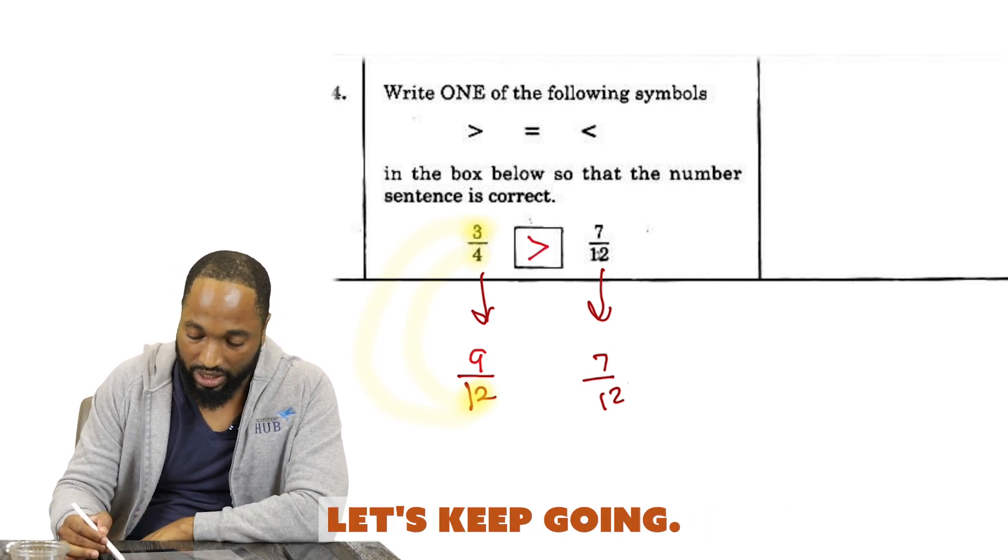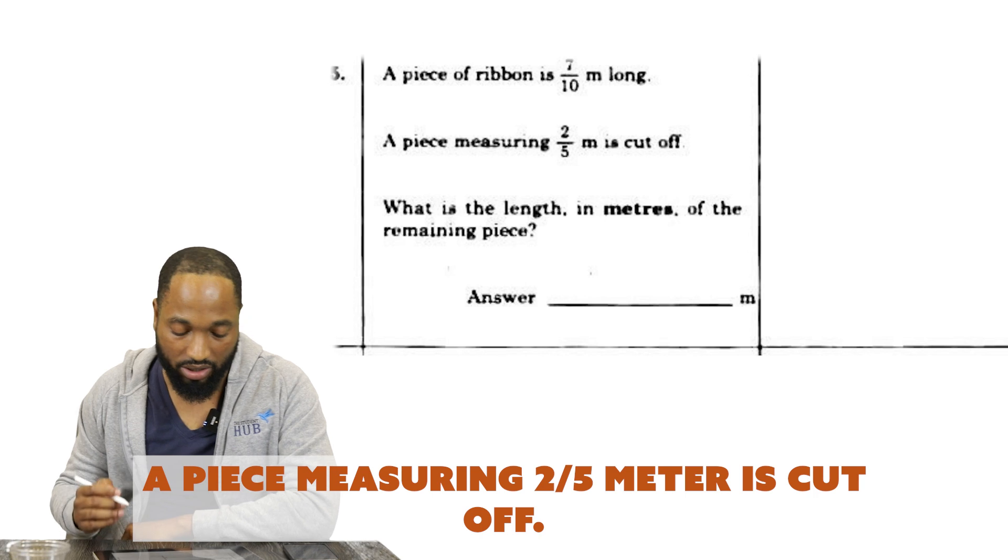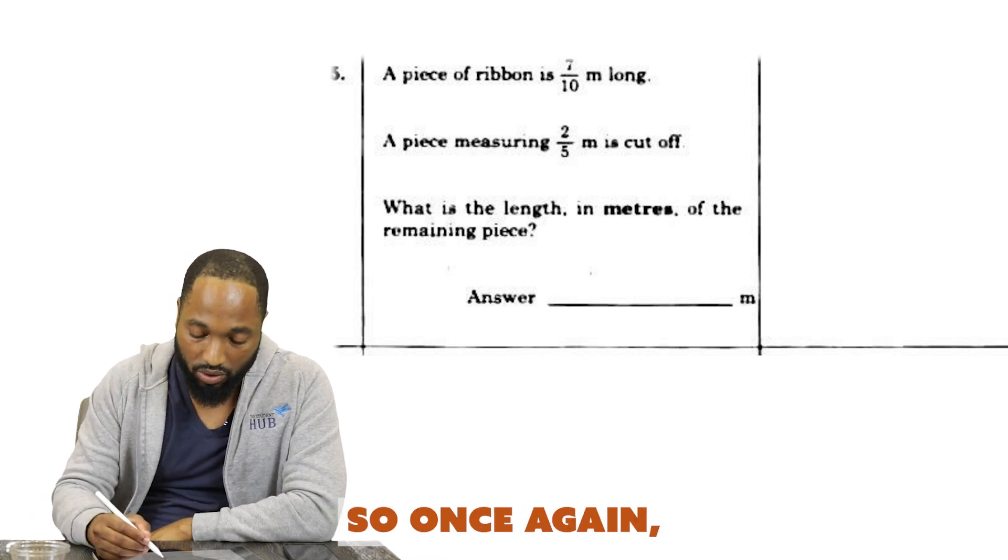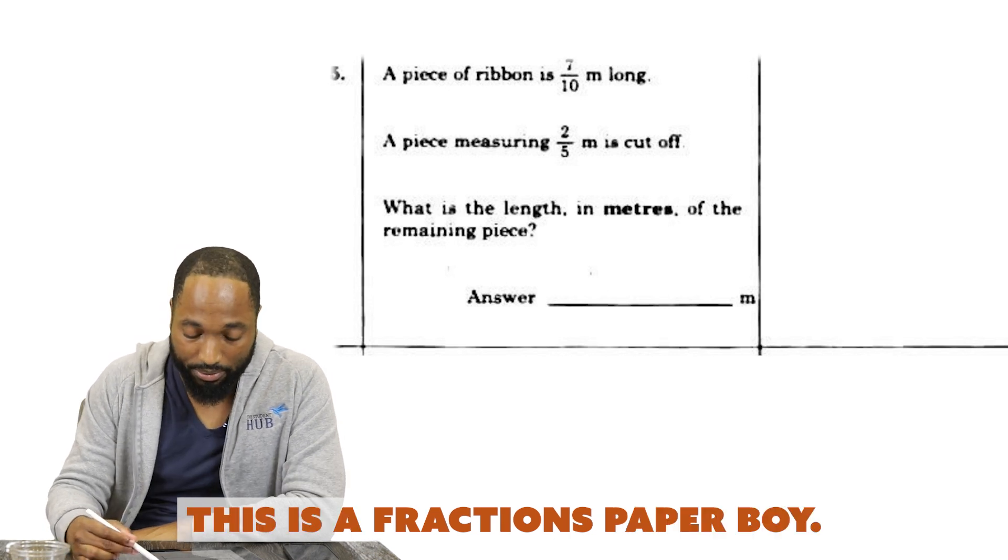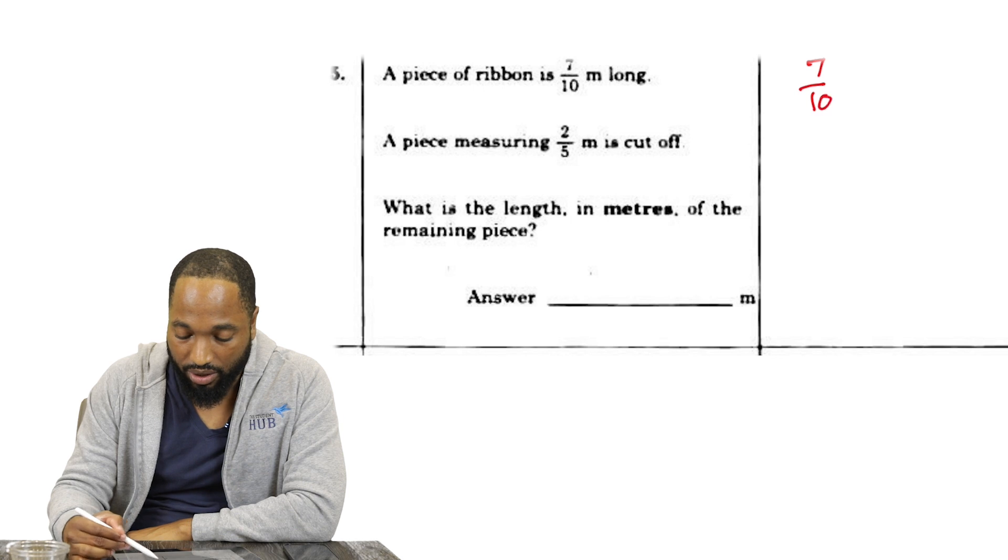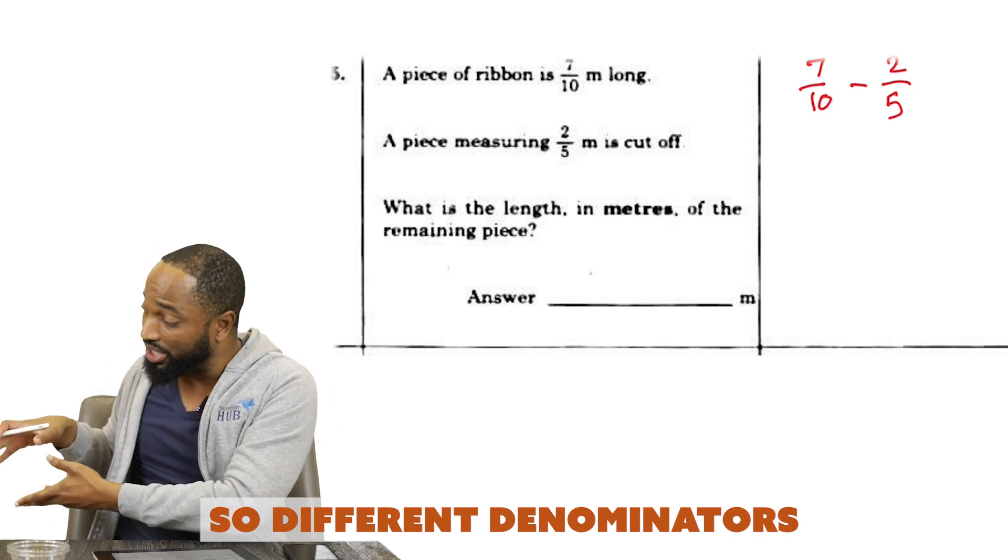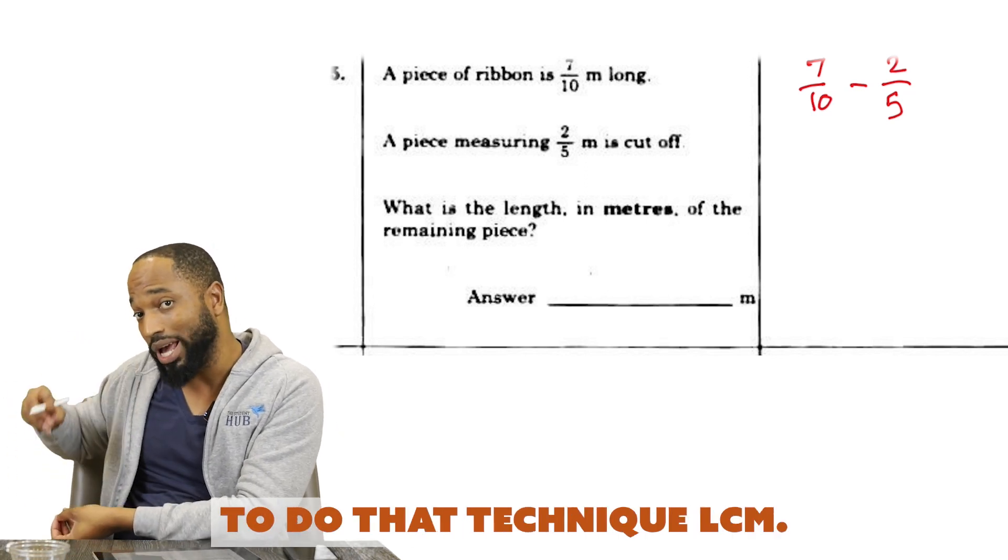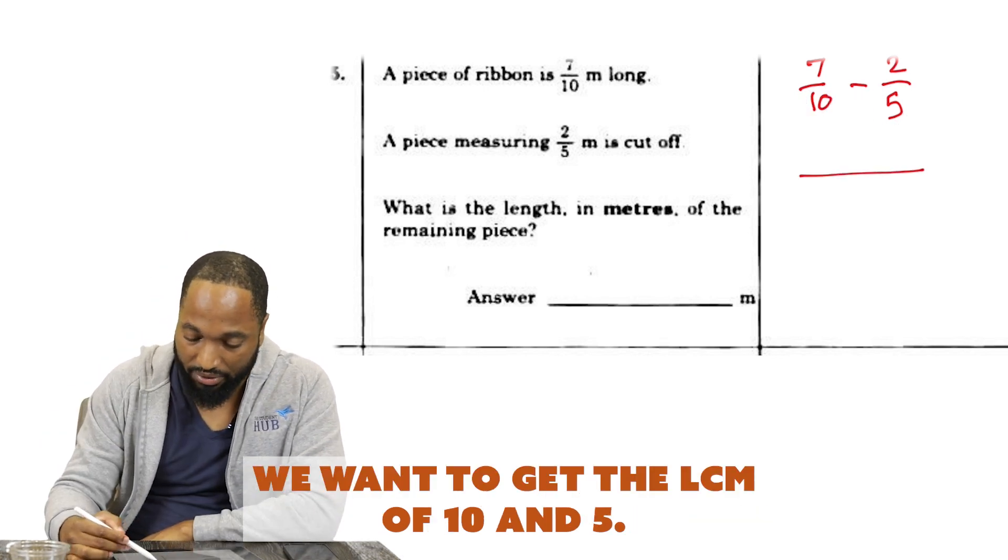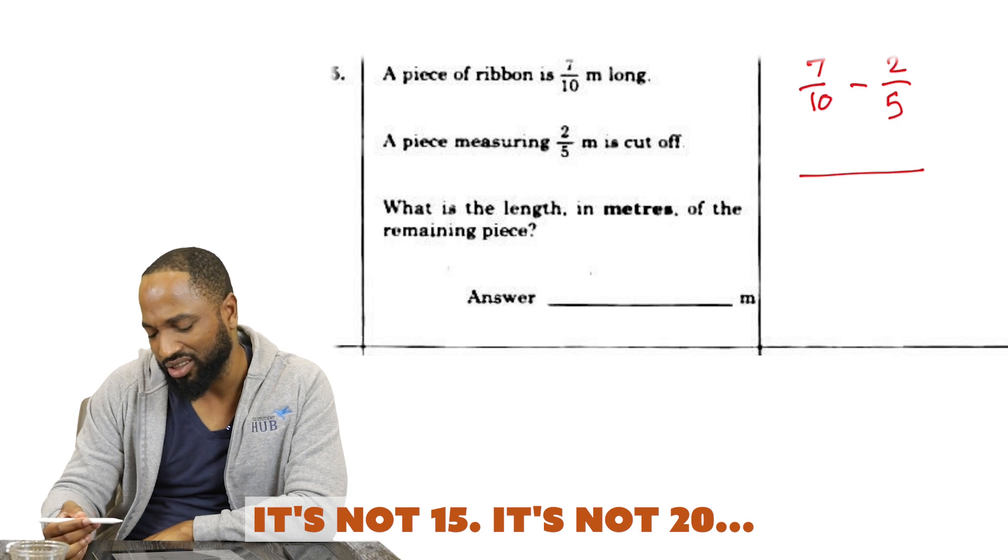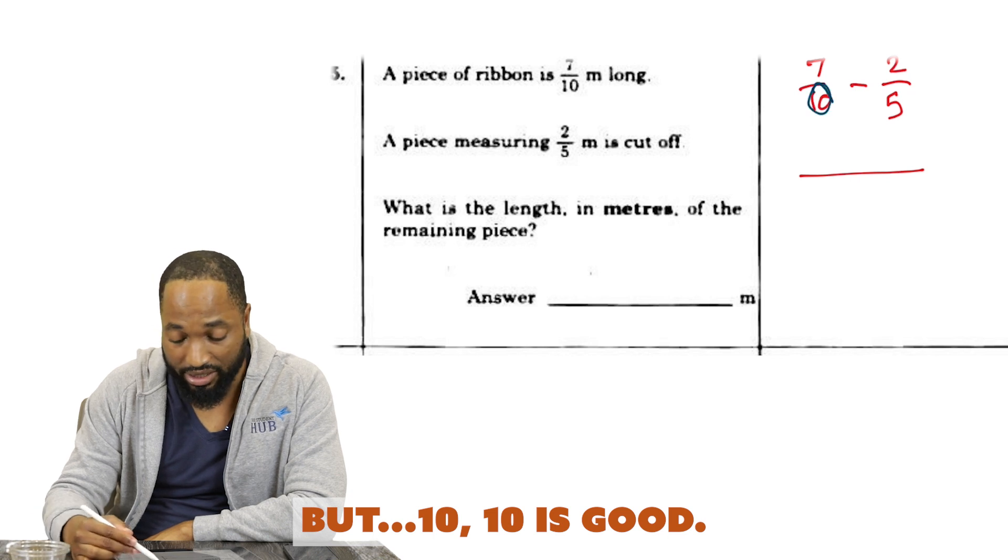Let's keep going. A piece of ribbon is 7/10 meters long. A piece measuring 2/5 meter is cut off. What is the length in meters of the remaining piece? So we've been asked to work with fractions. This is our fractions power. You have 7/10 and we want to find out what happens when we subtract 2/5. Once again, different denominators, so we need equivalent fractions using the LCM technique.